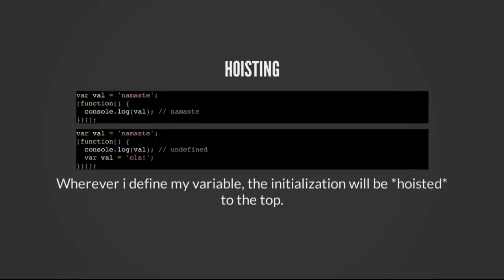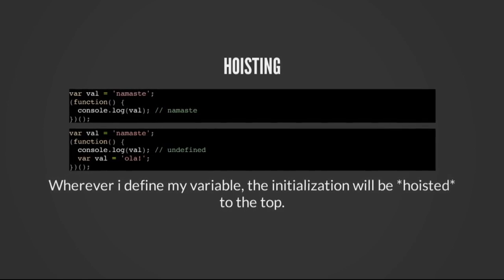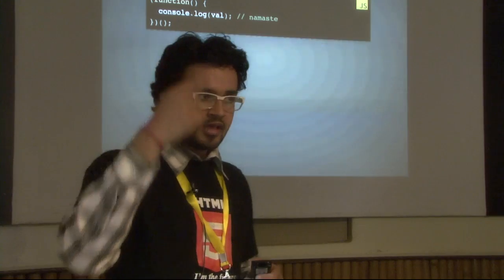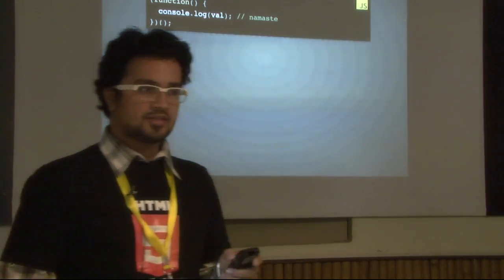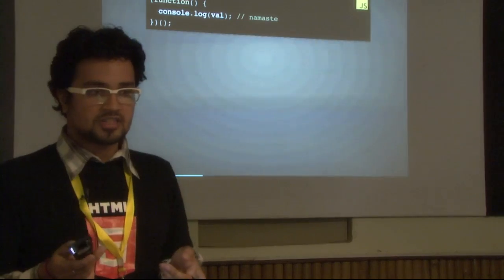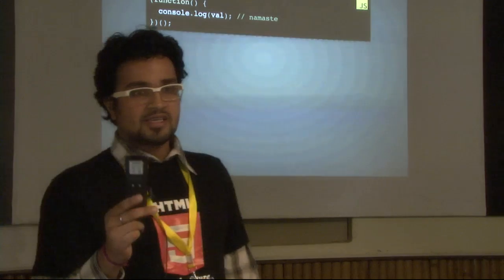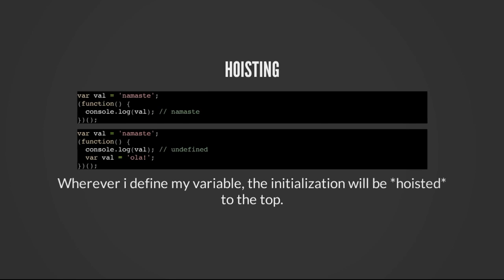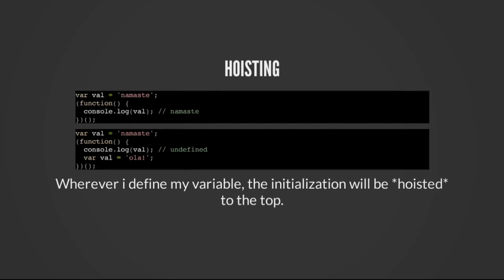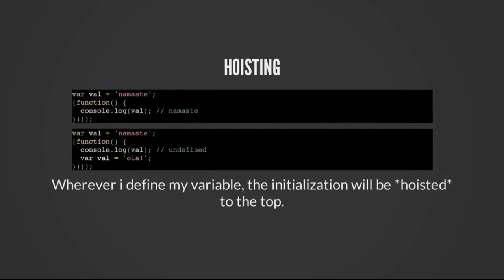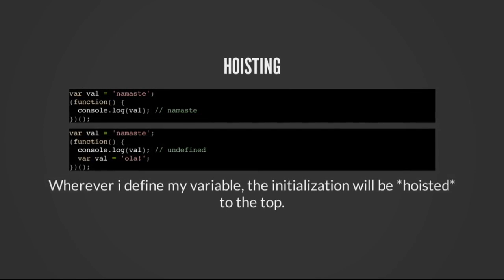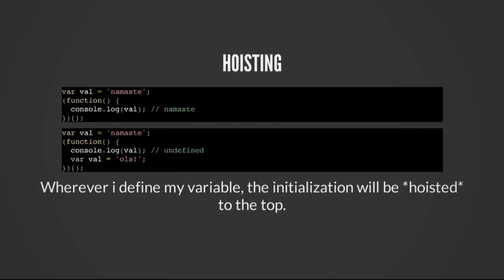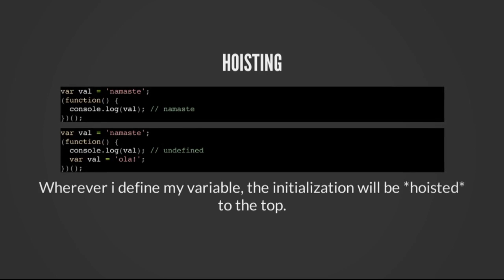Second thing: hoisting. In JavaScript, it's a dynamic language. I can instantiate a variable anywhere within the code, but there's some magic that JavaScript does — it moves the instantiation of the variable, just the instantiation, to the first line of the code. I have a simple function that outputs the value of a variable; in this case it's 'namaste'. When I instantiate a variable after the console.log as 'ola', it gives me undefined. This is hoisting.